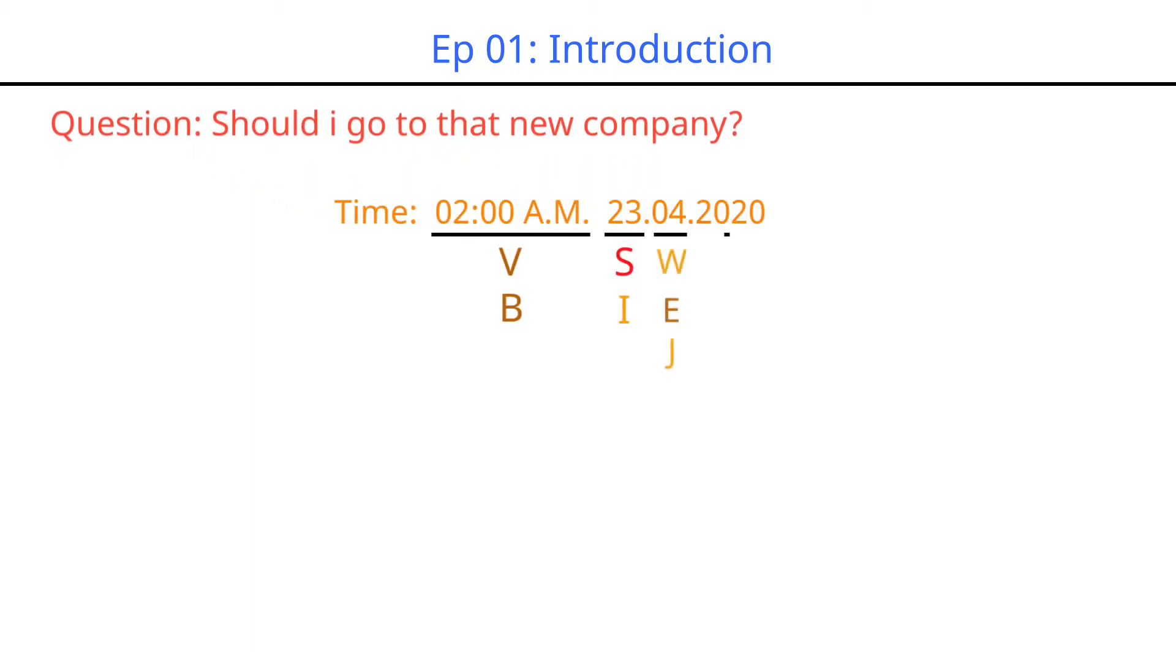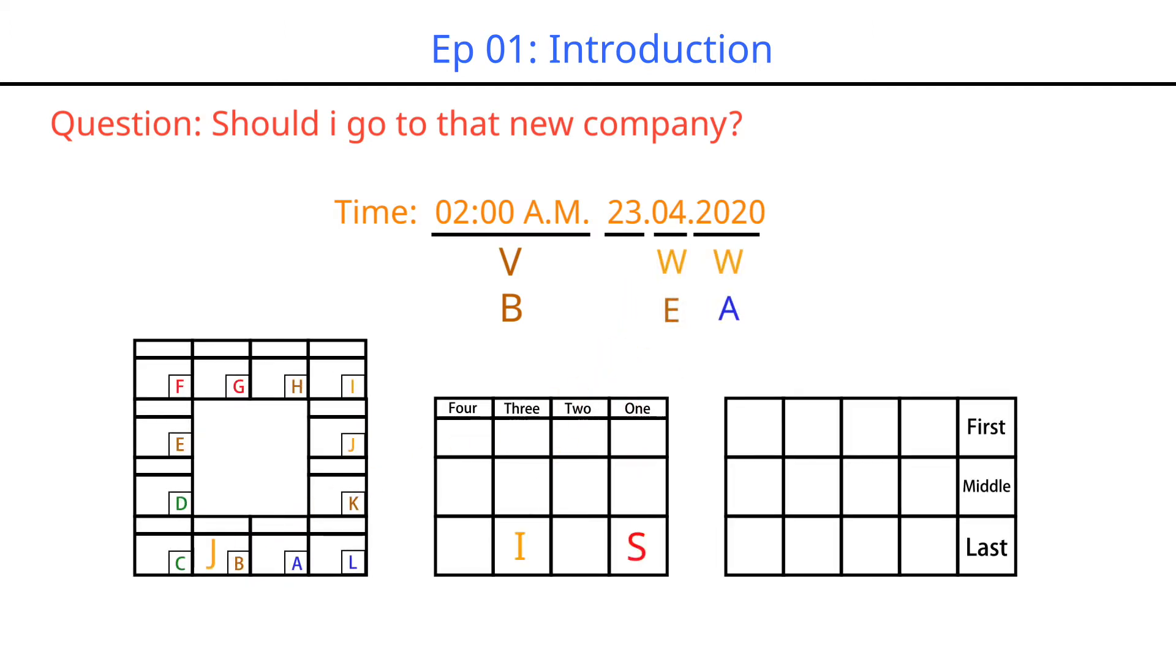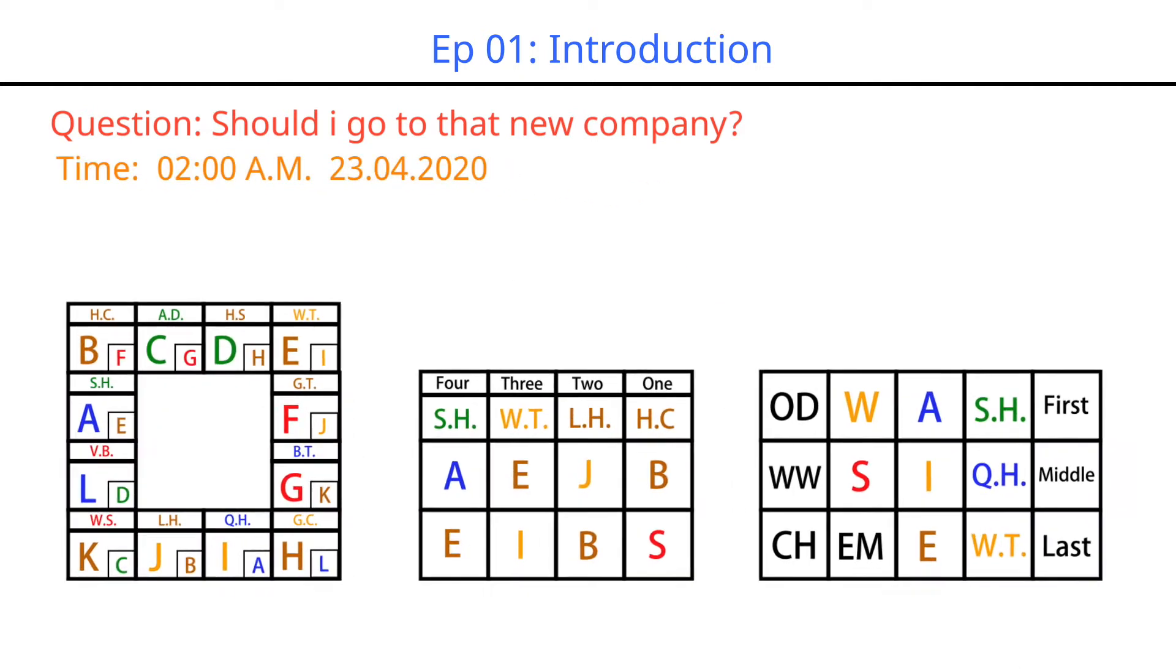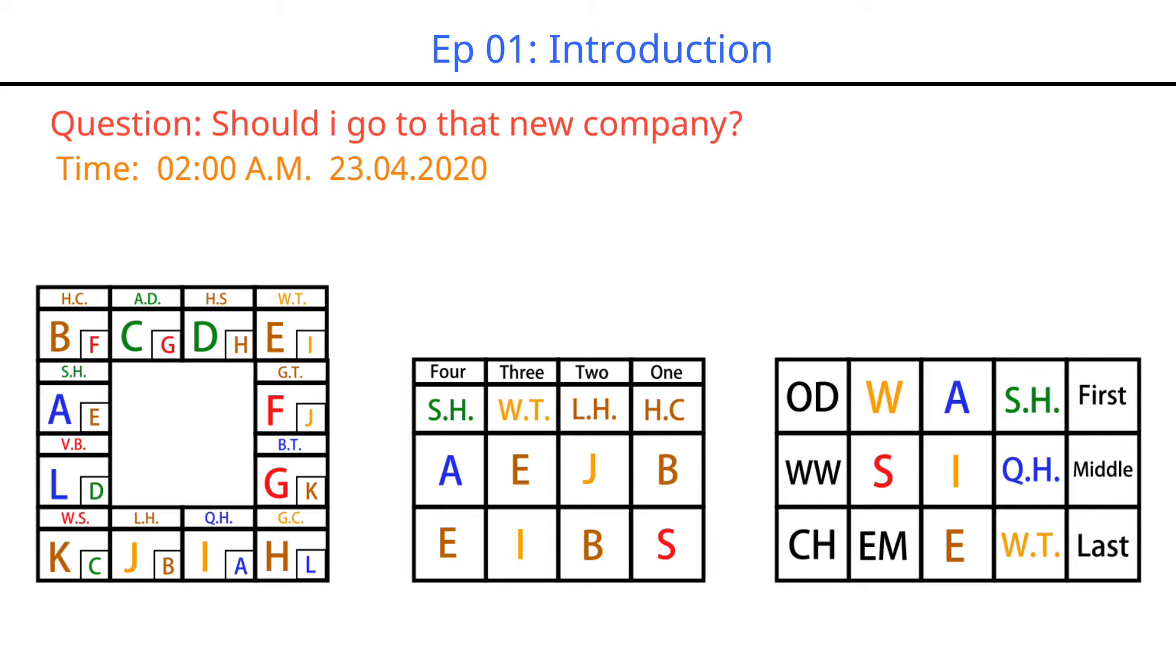Da Liu Ren also needs to follow his own unique rules to arrange some symbols. We analyze what these symbols represent and the relationship between these symbols to predict the final outcome of things, whether it's good or bad for you. The order of appearance of each symbol is the process of invoking a course.